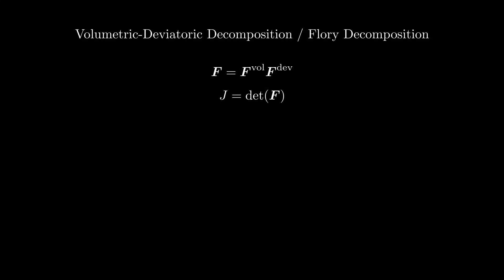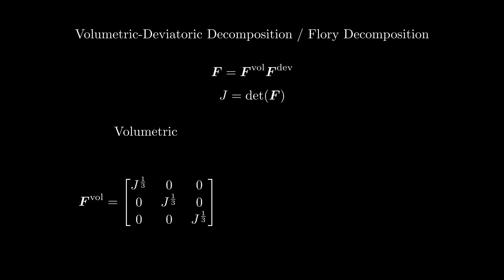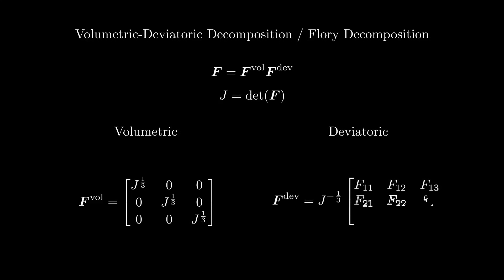F_vol is a diagonal matrix that has the cube root of the determinant of F as the diagonal entries, and F_def is F divided by the cube root of the determinant of F. If you work out the matrix-matrix multiplication, you will find that F_vol times F_def is indeed equal to F. So we have successfully decomposed F into two other matrices. But what have we gained from this?